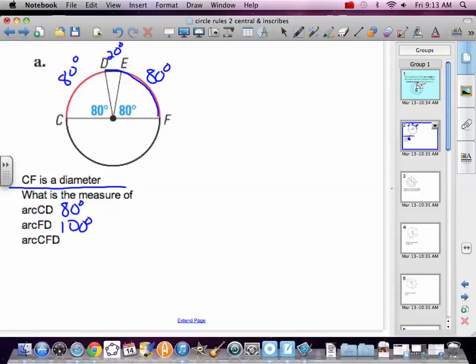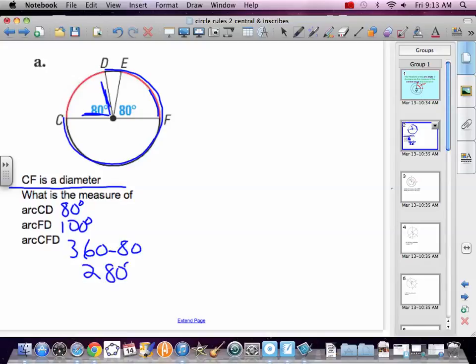CFD. Now we've got to go all the way around from C to F to D. Well, the only part I haven't gone is that 80 degrees. So whatever 360 minus 80 is, it's 280 degree arc around from C to F to D.